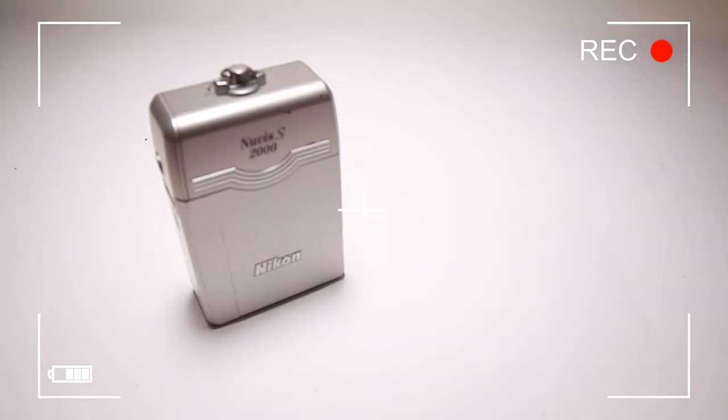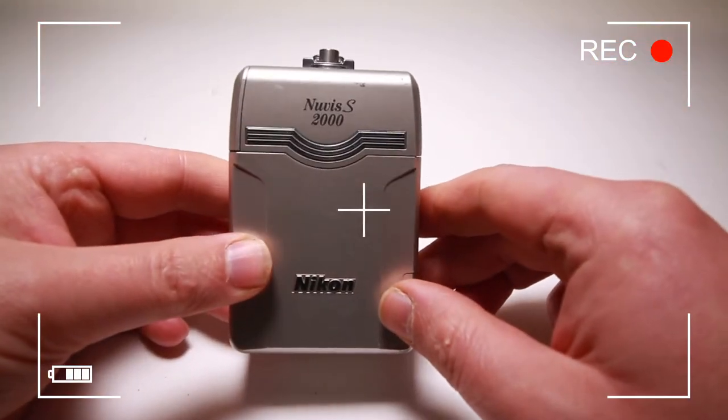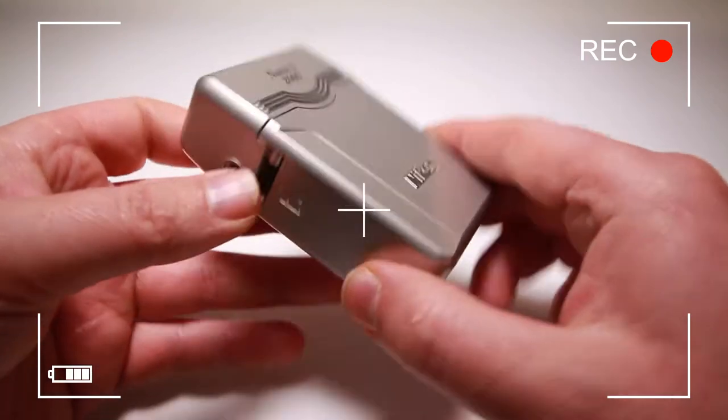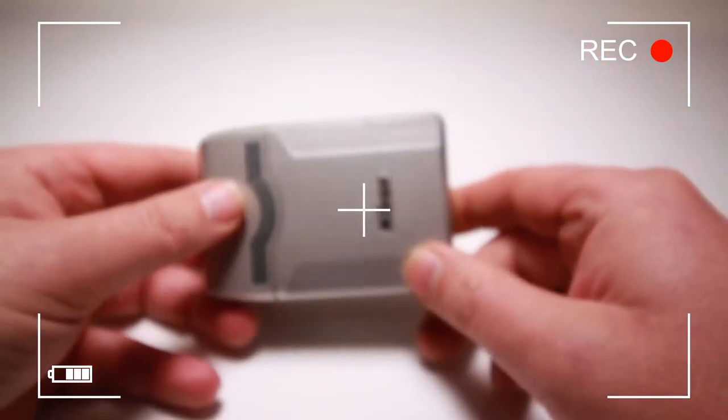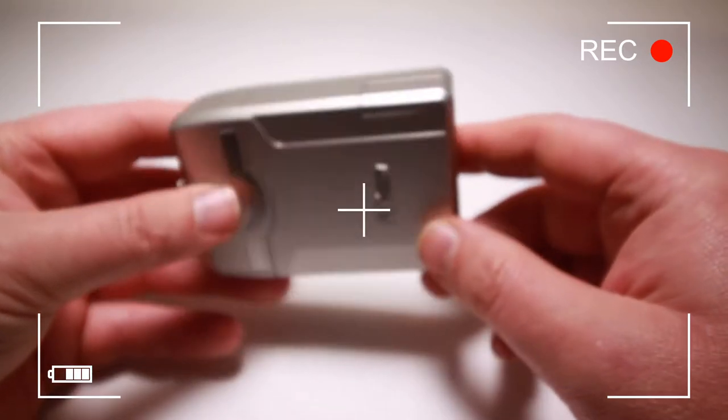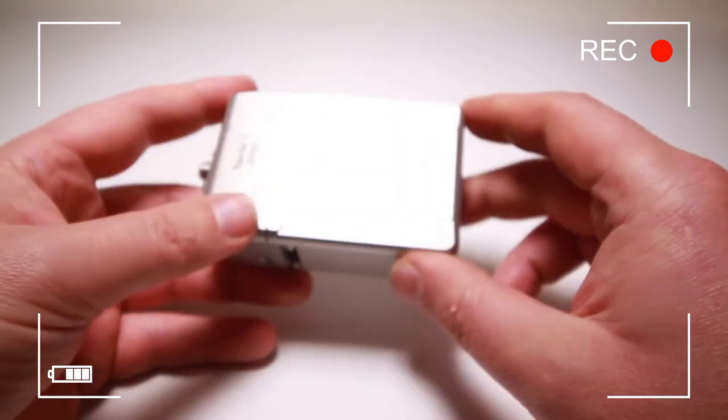Welcome to WowPrice. Today we have a Nikon Nuvis S2000. When I got this camera and had it hands-on for the first time, I was like, is that the camera or is that a box of cigarettes? It looks like a box of cigarettes - it's so compact.